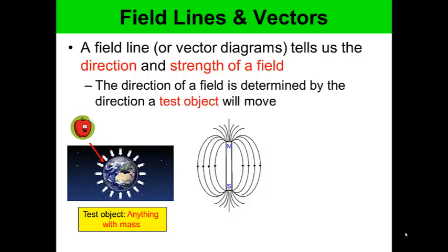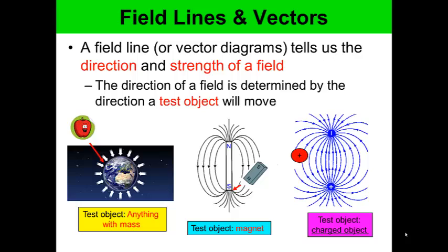In the second diagram, the field diagrams show that objects would be moving towards the north or south pole of the magnet, and the test object would be another magnet. In the third diagram, that is static electricity, and the test object would be another charged object. A positive charge would be repelled by the positive pole and move towards the negative pole.